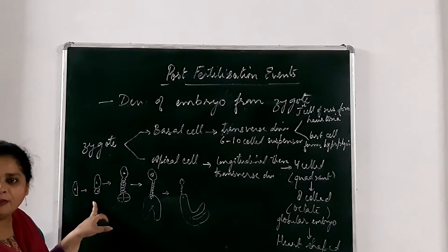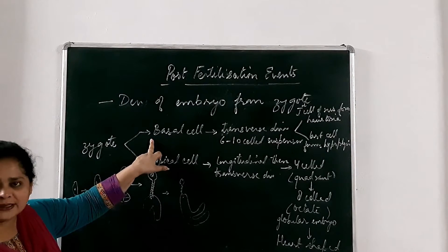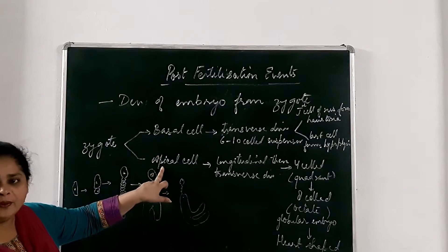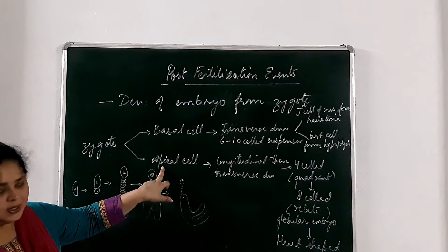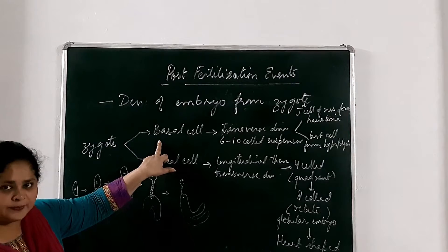This is known as pro-embryo now. And the upper one, bigger cell is known as basal cell. And the lower one, apical, is known as apical cell. Basal cell is towards the micropilar region.